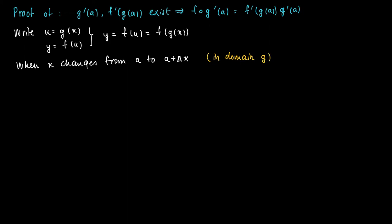So we're going to measure the change in g value. The change in g value equals Δu. Recall the epsilon function. So now we get the change along the tangent line through (a, g(a)), which is g'(a) times Δx plus a function ε_g(Δx) times Δx.